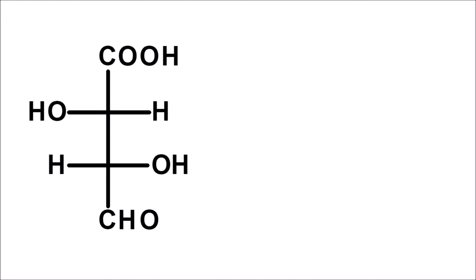Here we can identify two chiral carbons. This is one of the chiral carbons or asymmetric carbons which is attached to four different groups, and here again we can observe another chiral carbon. This compound is having two asymmetric centers. Let us give the numbering to the structure. Since carboxylic acid should be given preference, we have to start the numbering from the carboxylic acid. So this is the first carbon, second carbon, third carbon and fourth carbon. Asymmetric centers are present at second carbon and third carbon.